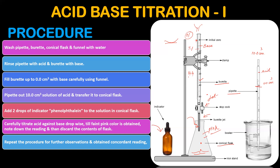You have to discard the conical flask contents, wash the conical flask, then fill it again and repeat. For example, the third reading might be 21.5.